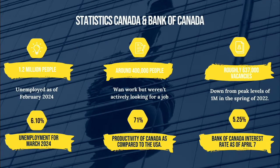Statistics Canada reports 1.2 million people are unemployed as of February 2024. Around 400,000 want to work but were not actively looking. Roughly 637,000 vacancies are open, down from 1 million last year. The unemployment rate has risen to 6.1%. According to the Bank of Canada, productivity has fallen from around 88% relative to the US in the late 1980s to 71% now, meaning businesses are not investing in technologies and equipment. The Bank of Canada interest rate currently stands at 5.25%.